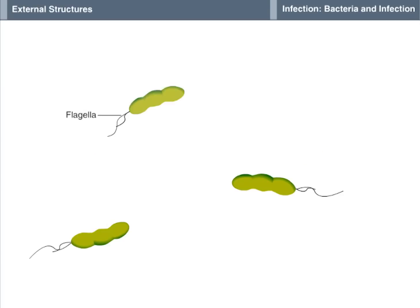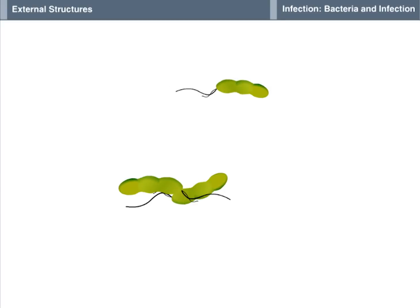Flagella are whip-like tails that are specialized extensions of bacterial cell walls. A bacterium may have one, several, or numerous flagella.